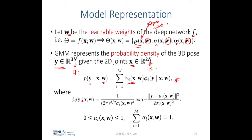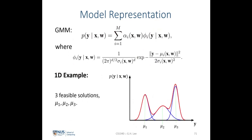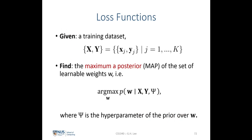We model the posterior distribution of the output 3D pose y conditioned on the 2D input x and learnable parameters w, using the Gaussian mixture model where alpha is the mixing coefficient and phi is each individual Gaussian component. The mixing coefficients must sum to one and lie between zero and one. In the 1D illustration, mu1, mu2, and mu3 correspond to three feasible 3D poses y1, y2, and y3.